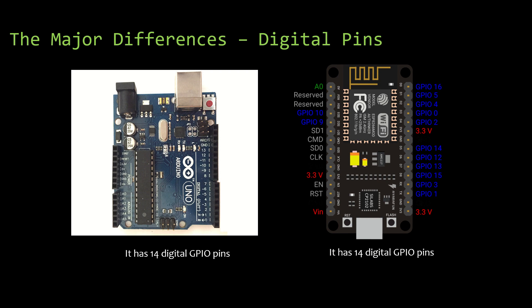The next difference is with respect to digital pins. The Arduino UNO has got 14 digital pins whereas NodeMCU has got the same number of digital pins, so there is no major difference in this aspect.